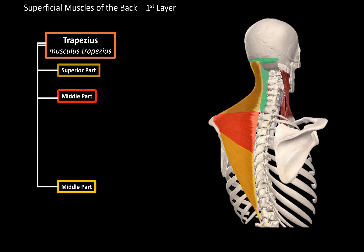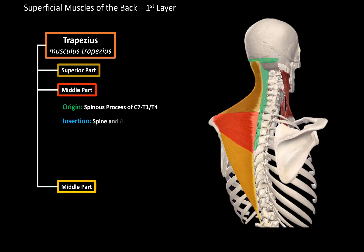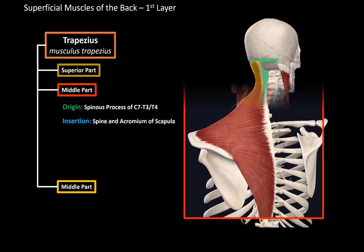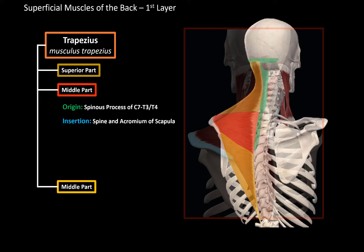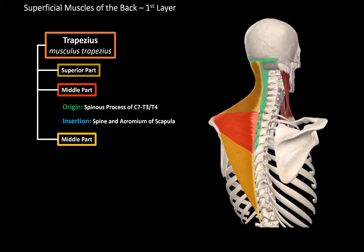The middle part originates from the spinous processes of C7 to T3 or T4, and inserts at the spine of the scapula, as you see here, as well as the acromion. The inferior part originates from the spinous processes of T4 to T12, and inserts at the spine of the scapula, as you see here.